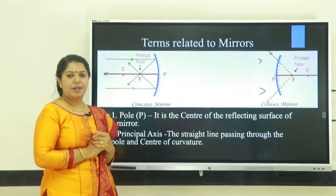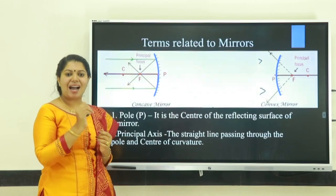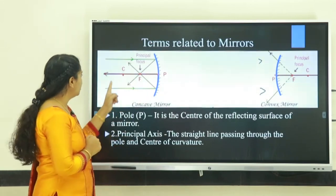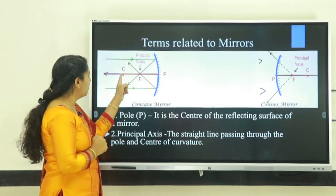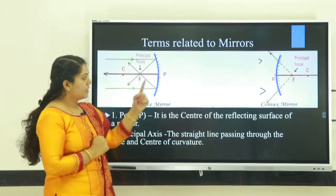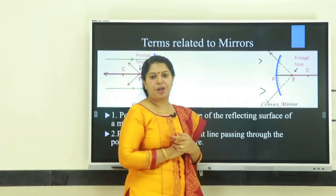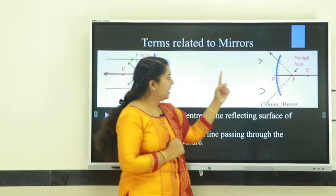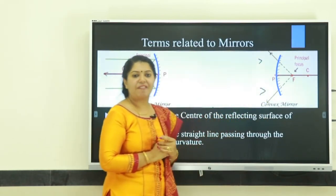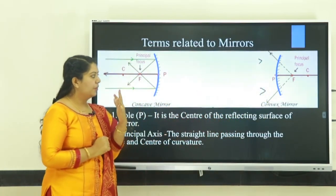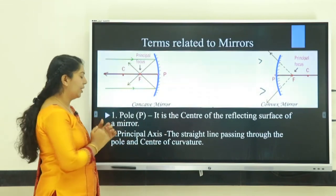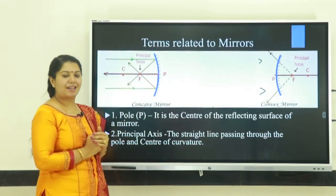Second term: principal axis. Principal axis is the straight line passing through the center of curvature C and the pole. The same definition applies for convex mirror also — it is the line passing through center of curvature C and pole of the mirror. That is called principal axis.